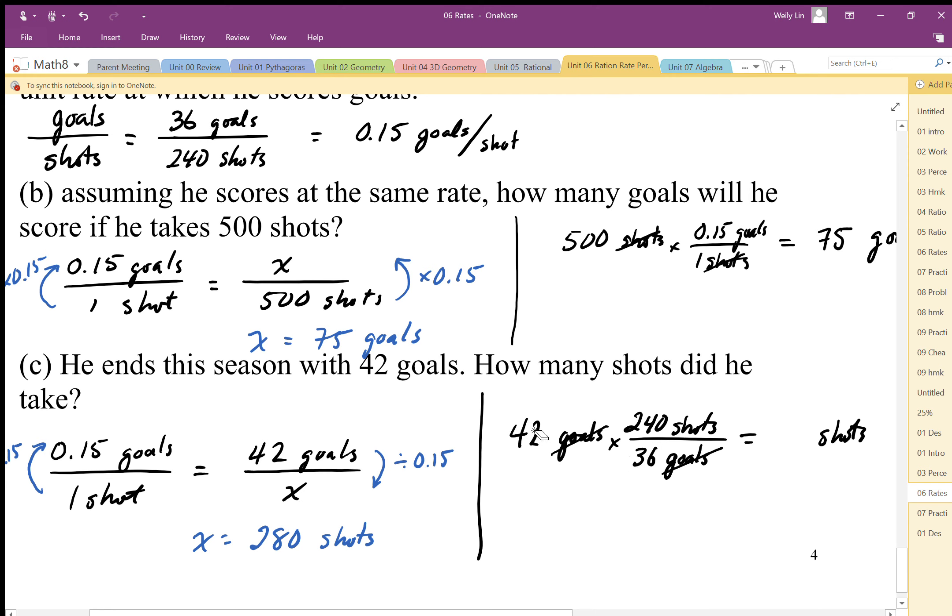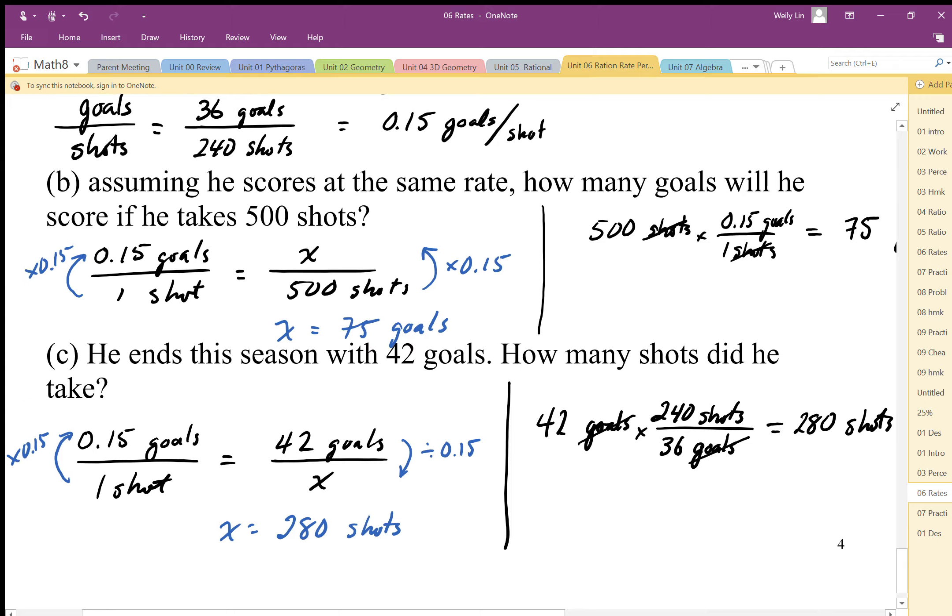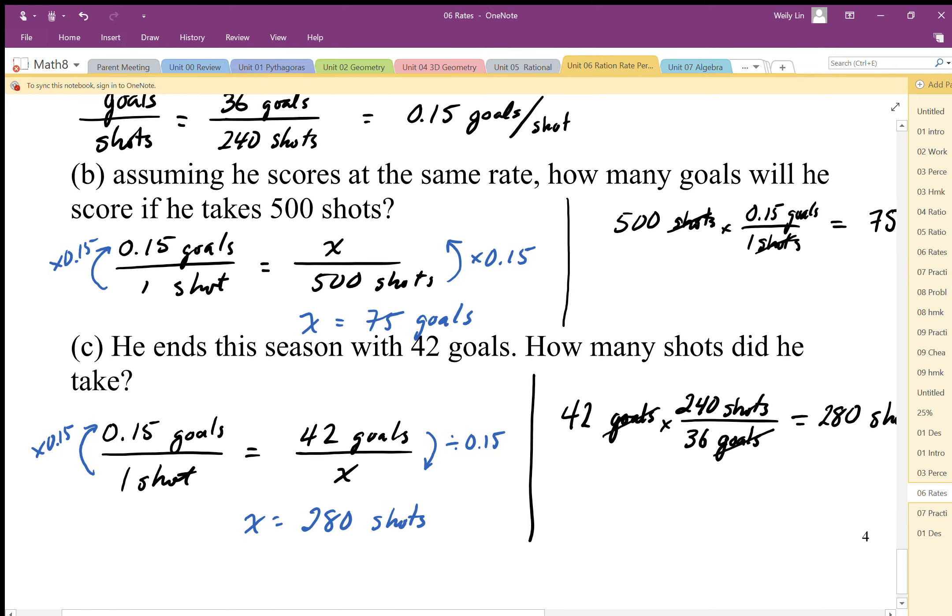Remember, with fractions, multiplication only goes into the numerator. If I do this calculation of 42 times 240 divided by 36 goals, I get the same answer of 280 and I can see the units left over is shots. This multiplying strategy is a slightly more efficient way to do it, but if we're not sure how this works, we should always go back to our proportional equation. A proportional equation is our go-to method, our simpler method. Anytime we get harder problems and we're confused or not sure what we're doing, we always go back to a simpler strategy, which would be to use a proportional equation and the multiplying factors involved.